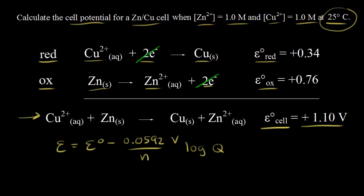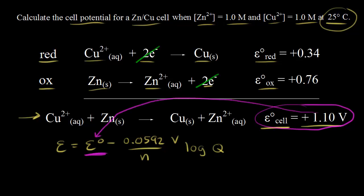Let's think about what these terms mean in the Nernst equation. The standard cell potential E-zero — we've already found that, it's 1.10 volts, so that gets plugged in here. N is the number of moles of electrons that are transferred in our redox reaction, and that's two — two moles of electrons are transferred, so N is equal to two.